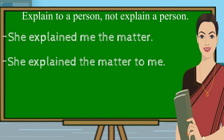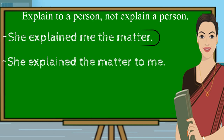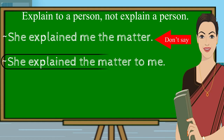Let us move to the next sentence. Please read the first sentence: 'She explained me the matter.' Here, the word 'explained' is conveying the sense of explaining to the speaker, which is incorrect. We need something placed between 'explained' and 'me.' So the correct sentence should be: 'She explained the matter to me.'